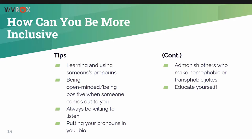What can you do to make your space more inclusive for members of the LGBTQ+ community? Learn and use someone's pronouns — always, even when they're not in the room, especially when they're not in the room. Be open-minded and positive when they come out to you. Always be willing to listen to and respond to stories of discrimination, homophobia, and transphobia. Putting your pronouns in your bio is very helpful, and introducing yourself with your pronouns — even if you're not trans — makes trans people feel more comfortable doing the same. Admonish others who make homophobic and transphobic jokes. And make sure you educate yourself.